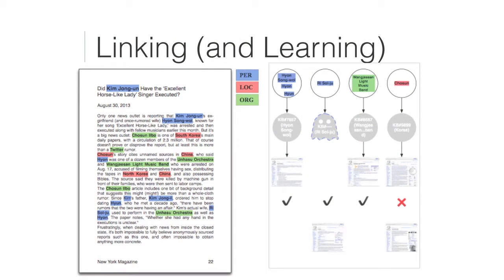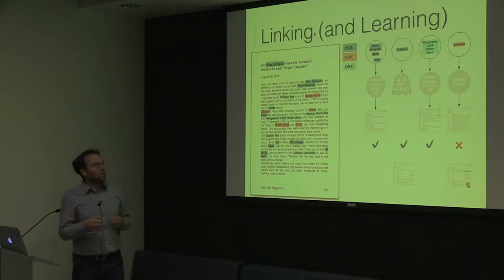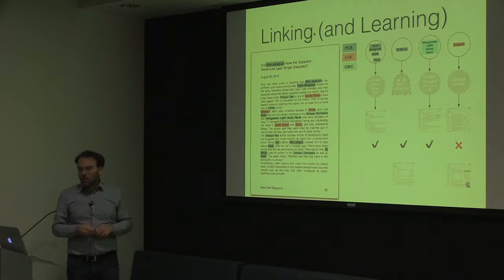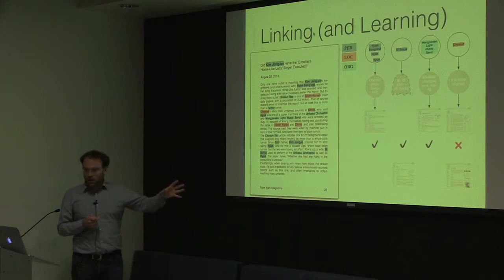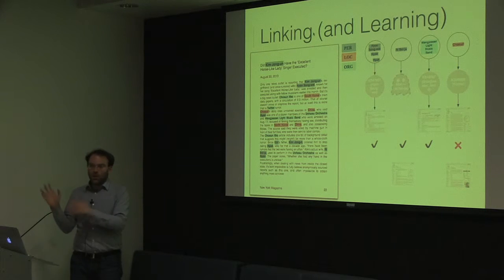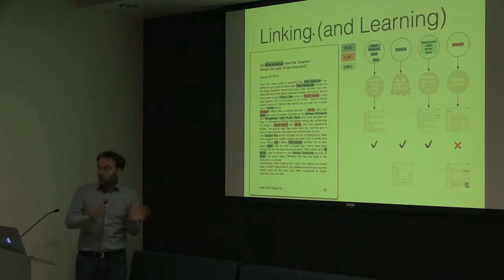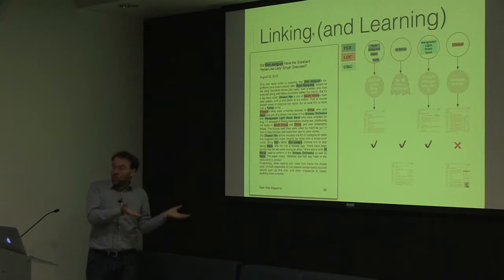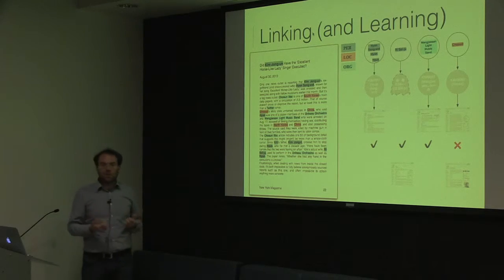The linking system said: the nearest thing to Hyun Sung-wal was this person. It couldn't find anything for Ries Solzier — she's a ghost, a new entity, which is actually correct. Wang Jian light music band — got that right. And it screwed up Chosun-ilbo. So you've got two opportunities: one for correction — you could say any time you see Chosun in this domain it means the newspaper — or you can feed back that it was wrong so next time it links correctly. And for Ries Solzier, now you have some context you can link her to a new dummy article for better disambiguation later.